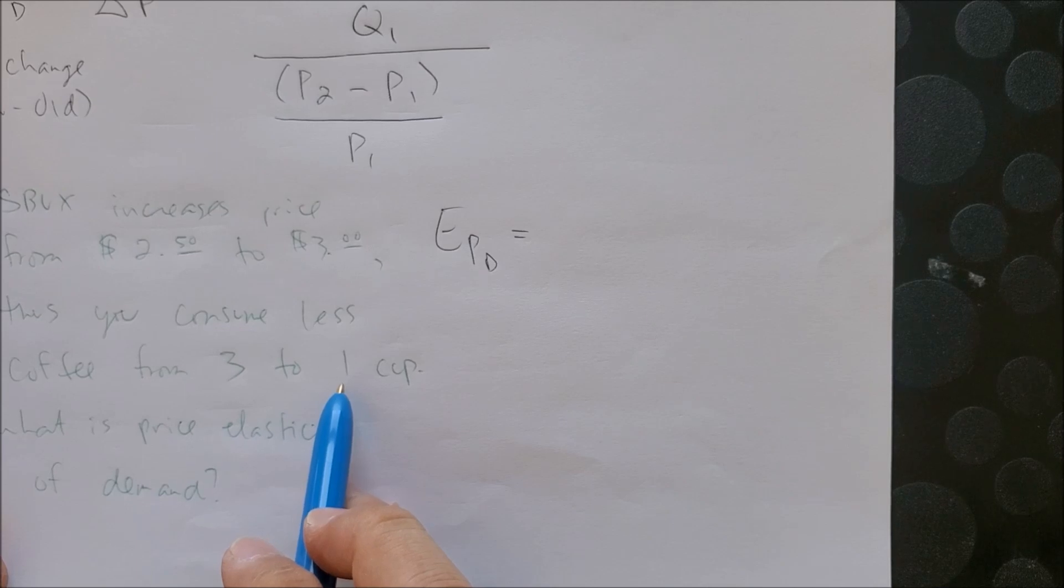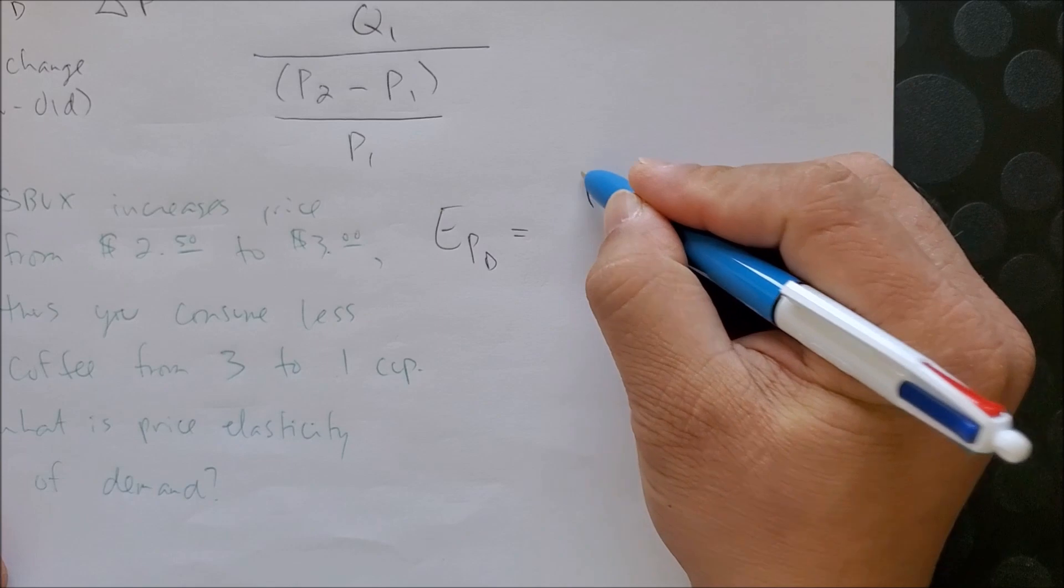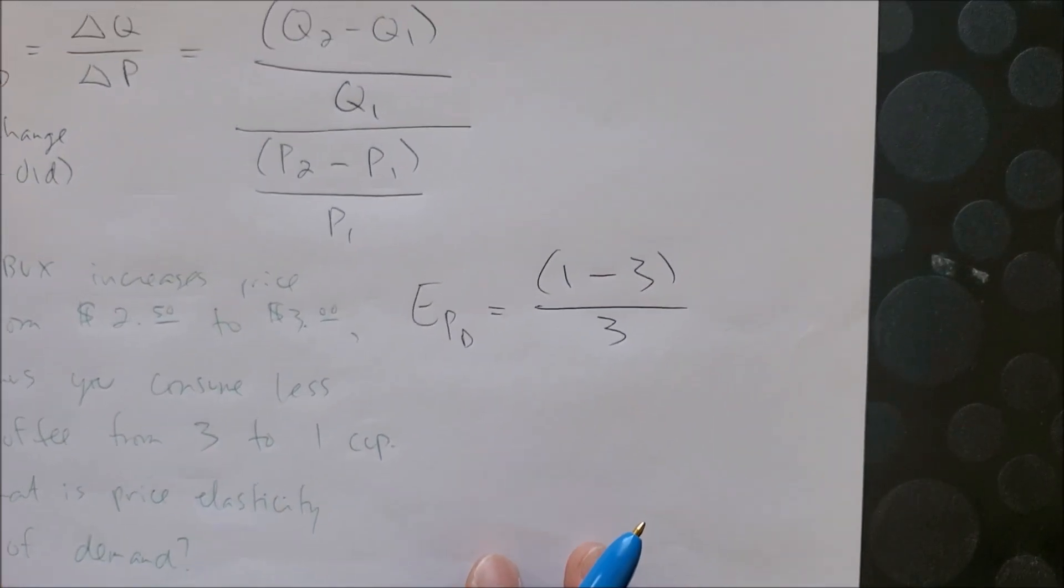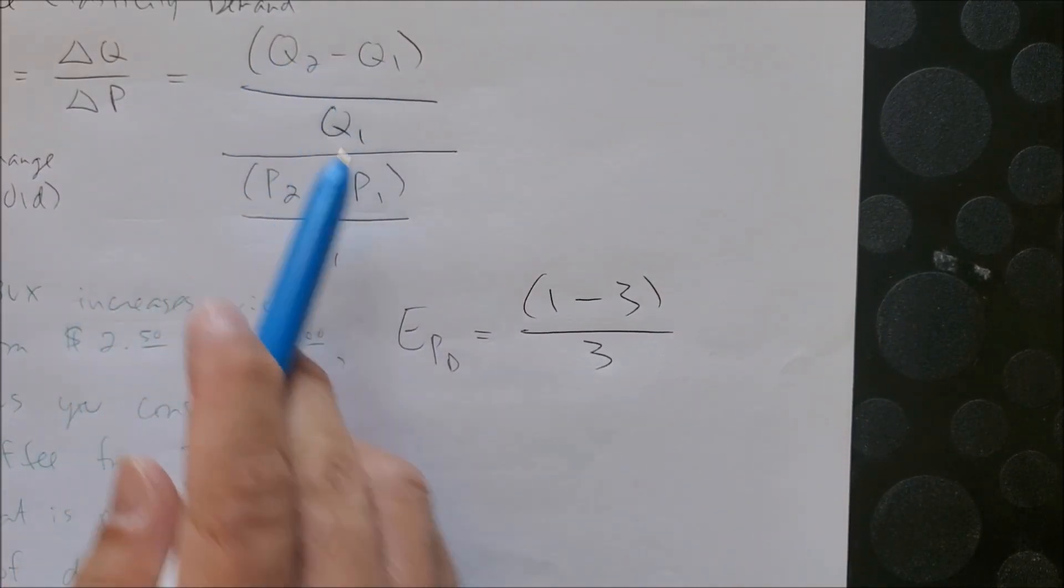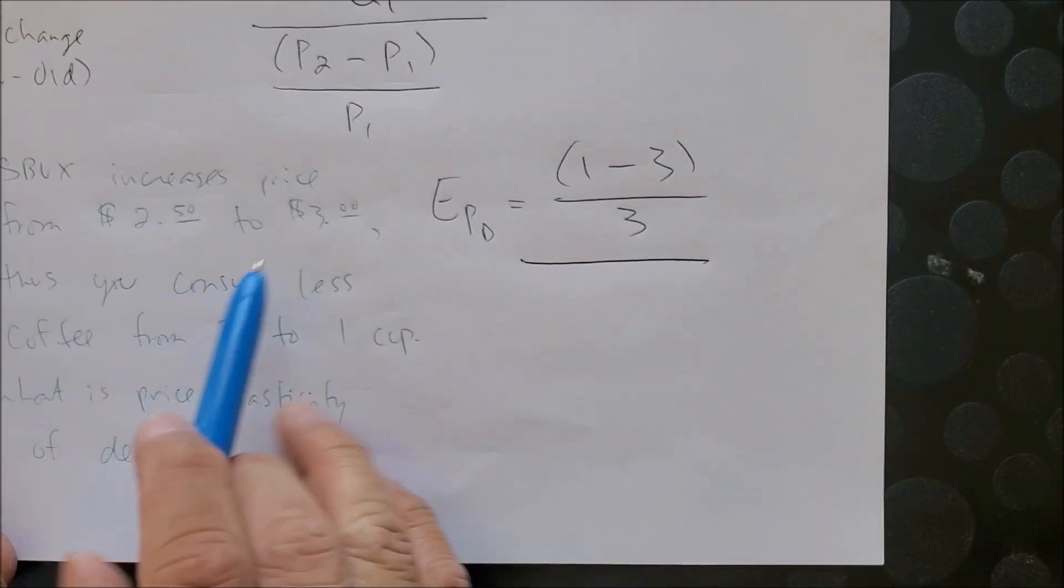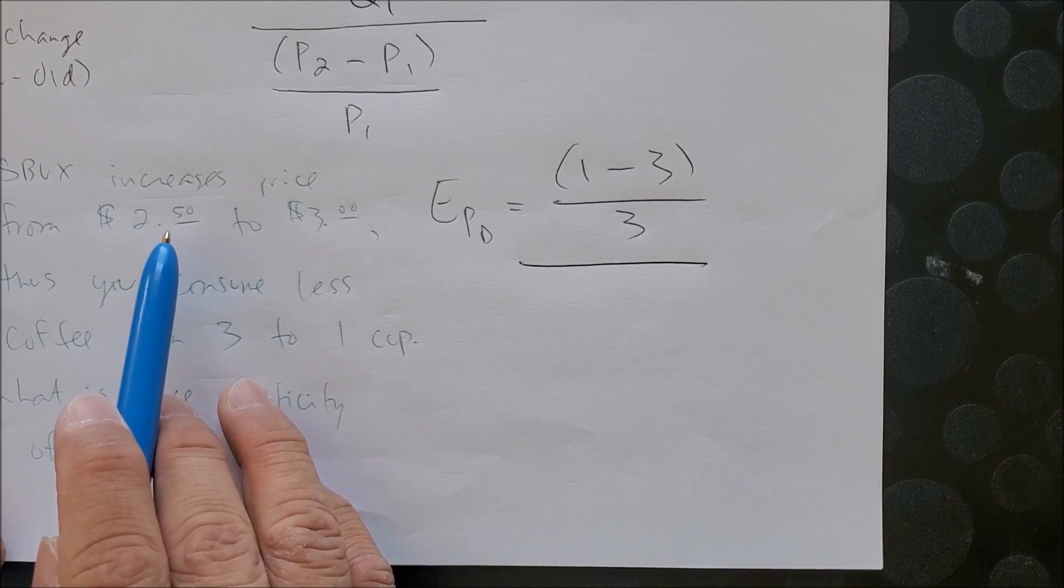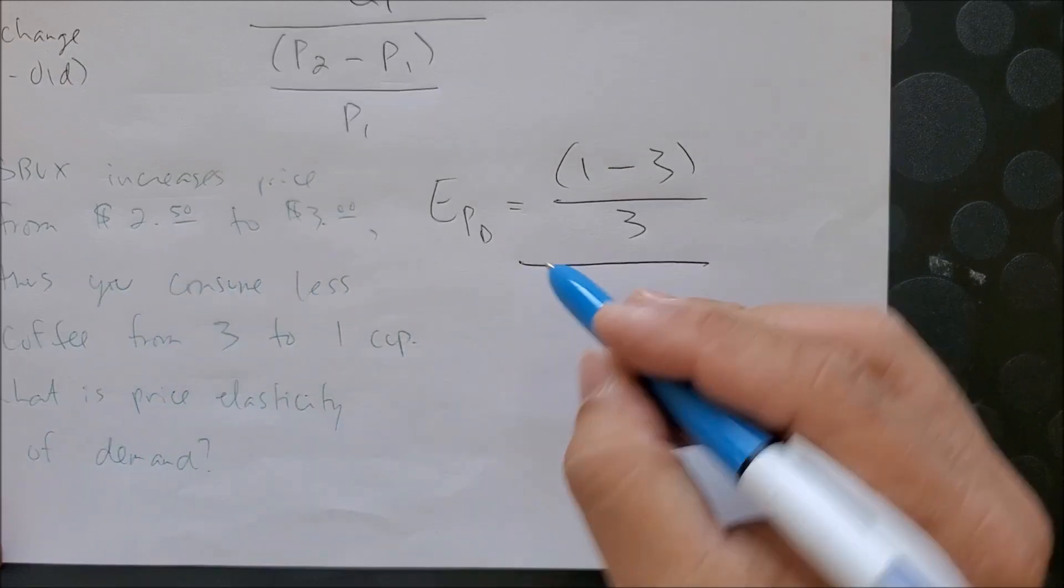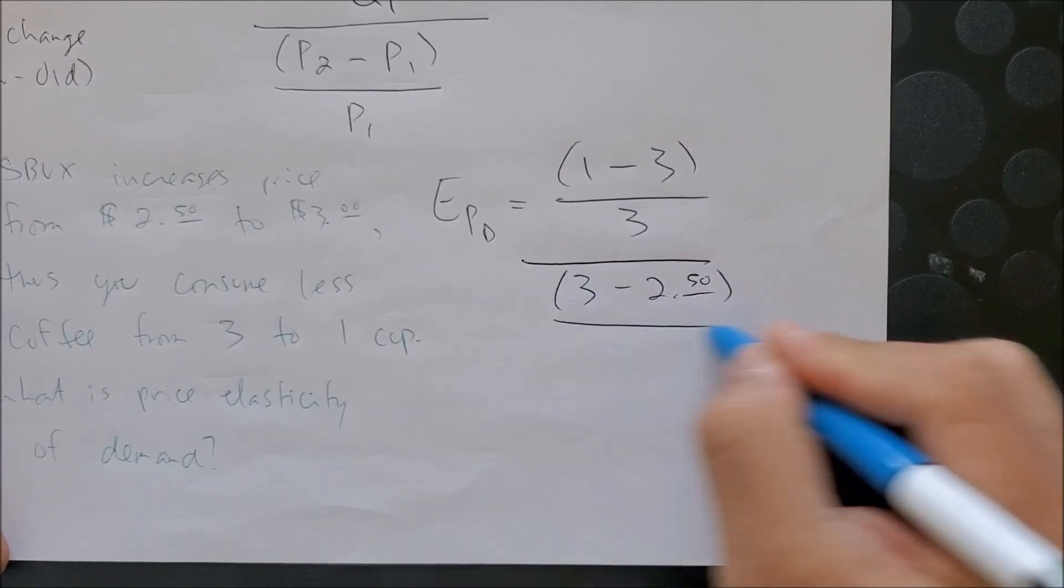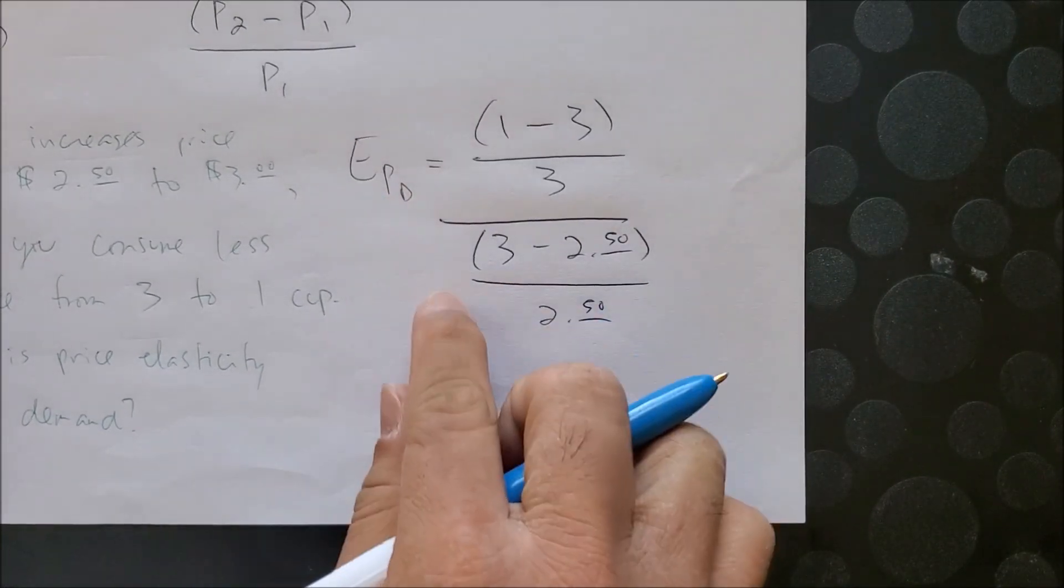Now we have q2, 1, minus q1, 3, parentheses over q1, 3. As you can see with our equation, it does reflect what we have here. Over, we have $3.00 as the new price and $2.50 as the old price. So 3 minus $2.50, parentheses over $2.50. And now we can solve for price elasticity of demand.